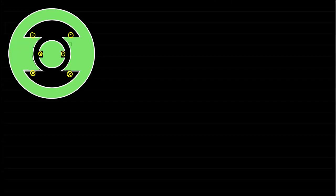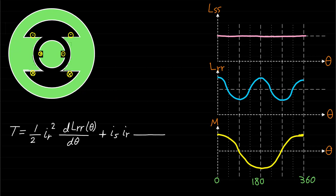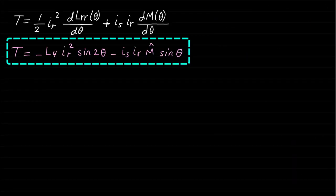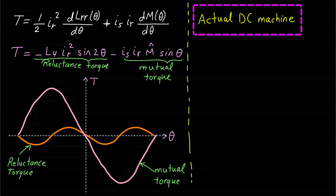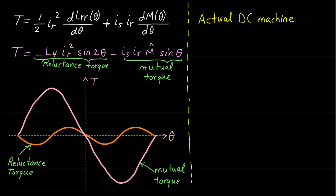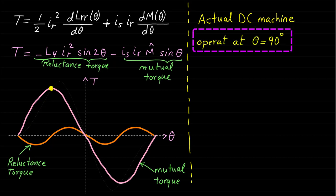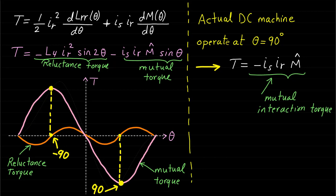In conclusion, the inductance relationships of this machine are as shown. Therefore, the total torque expression equals only two components: the rotor reluctance torque component and the mutual interaction torque component. It is very interesting to know that the total torque expression of the actual DC machine consists of only one torque component, which is the mutual interaction torque component. The reason is that the actual DC machine is designed with two brushes located at 90 degrees with respect to the stator magnetic field, so theta equals 90 degrees. At this operating point, the rotor reluctance torque is zero and the mutual torque is maximum. Therefore, the total torque of the actual DC machine consists of only the mutual interaction torque component.